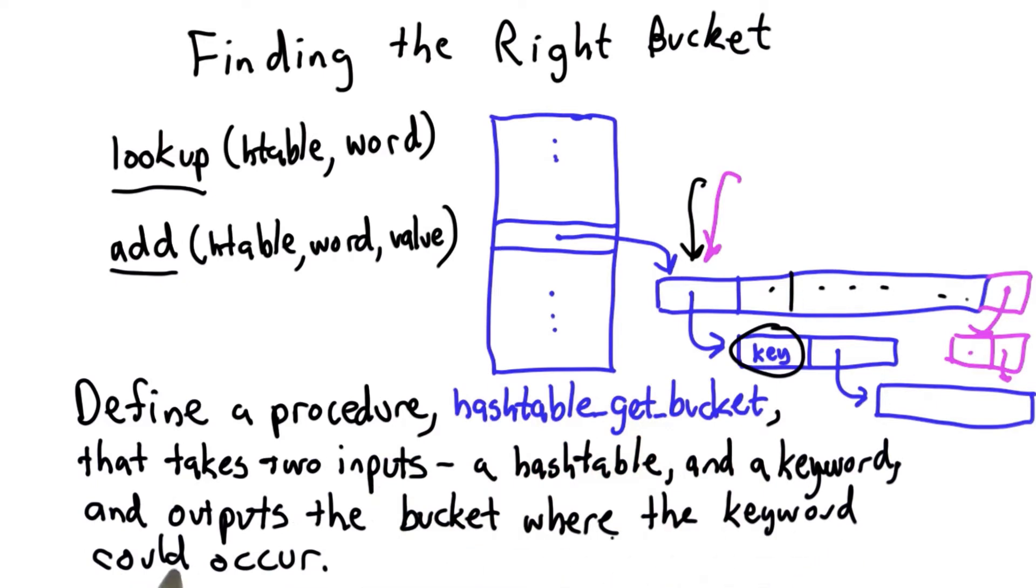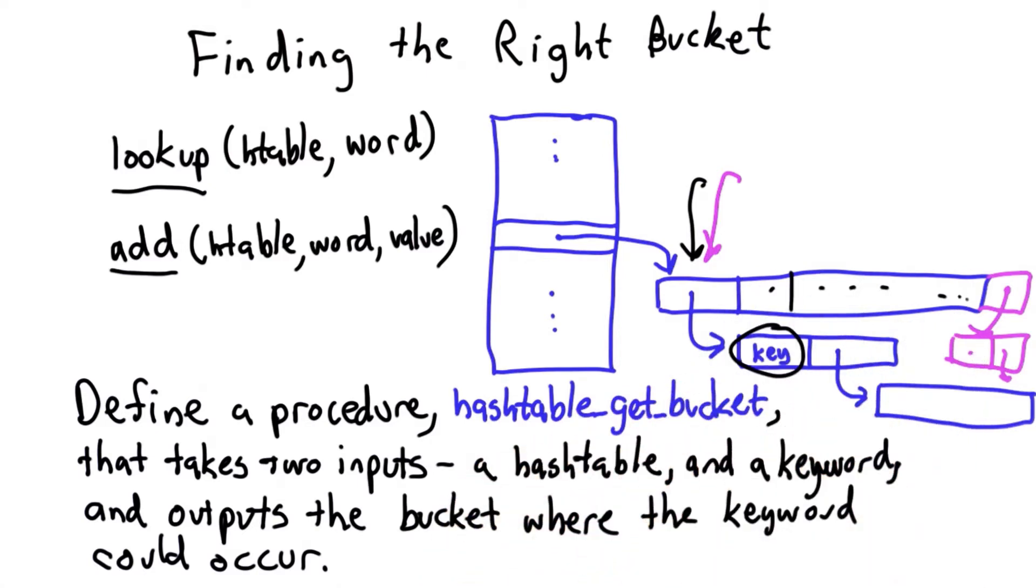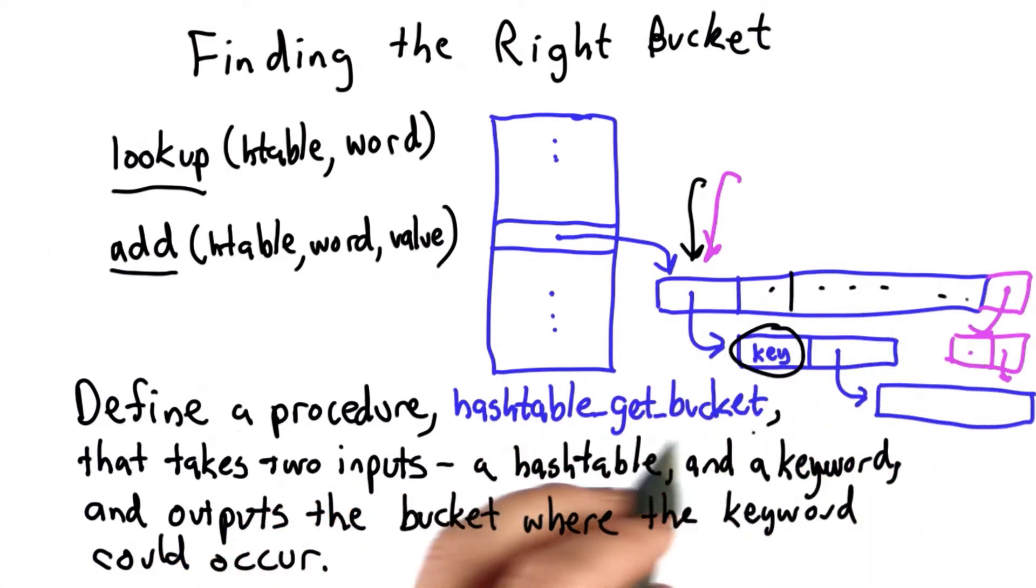It will output the bucket where that keyword could occur. We don't know yet whether that keyword is actually in the table—it might be in that bucket or might not—but the important thing hash_table_get_bucket should do is find the bucket.